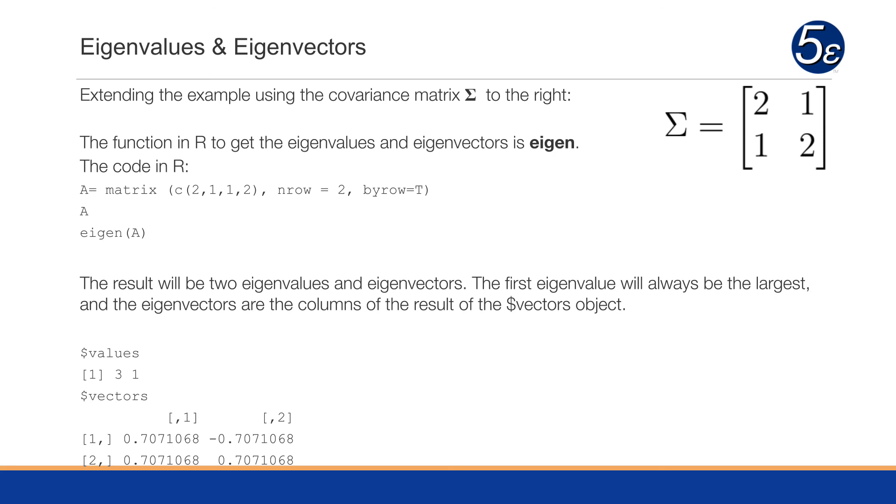And the eigenvectors are the columns of the result of the vectors object. So we see below, we have the vectors. We have the first column, which is the first eigenvector, and the second column, which is the second eigenvector.